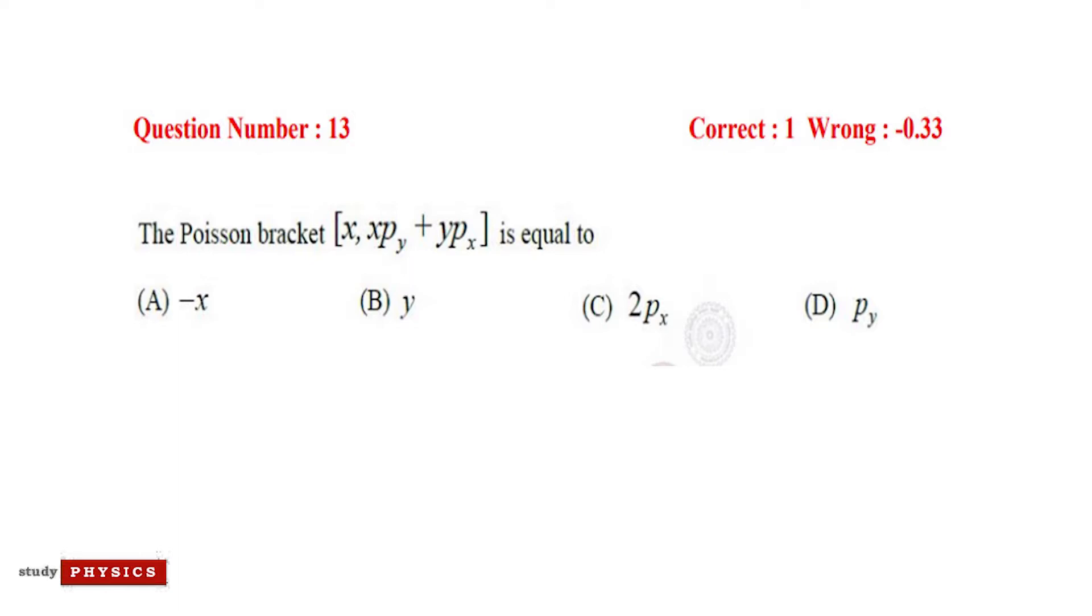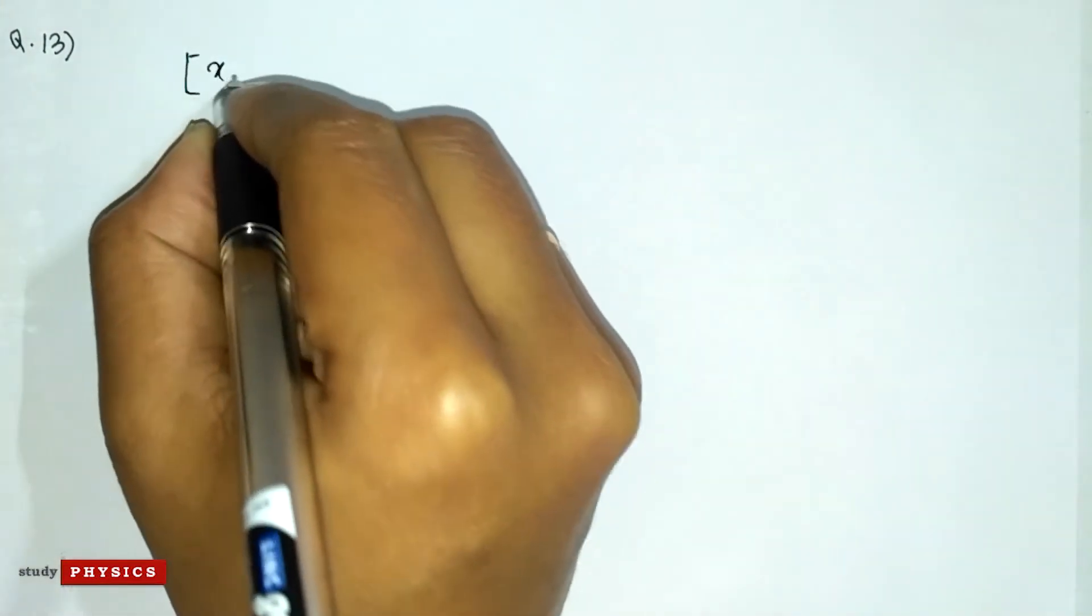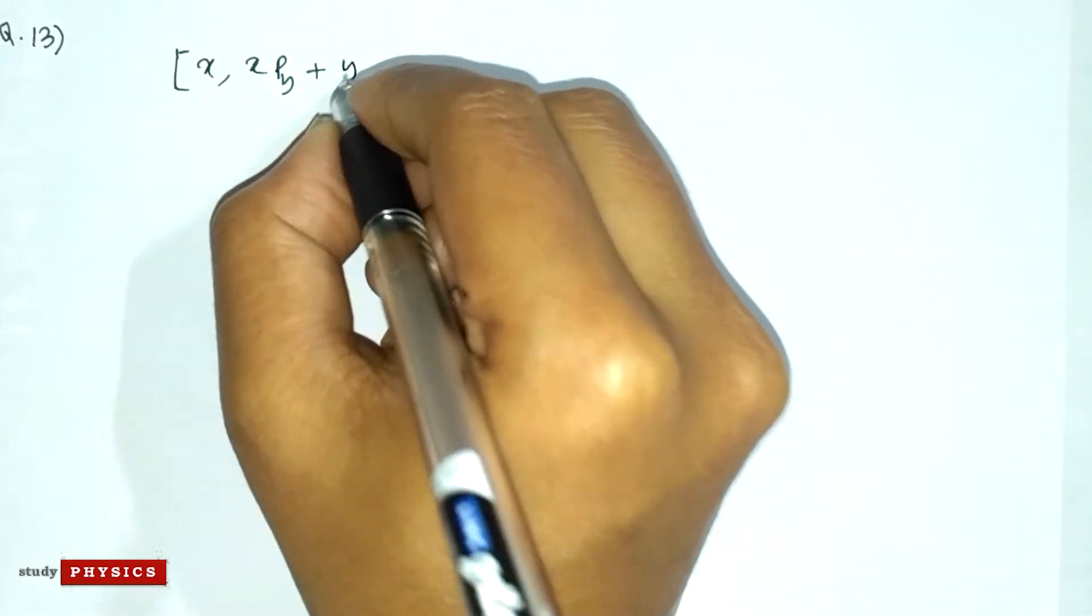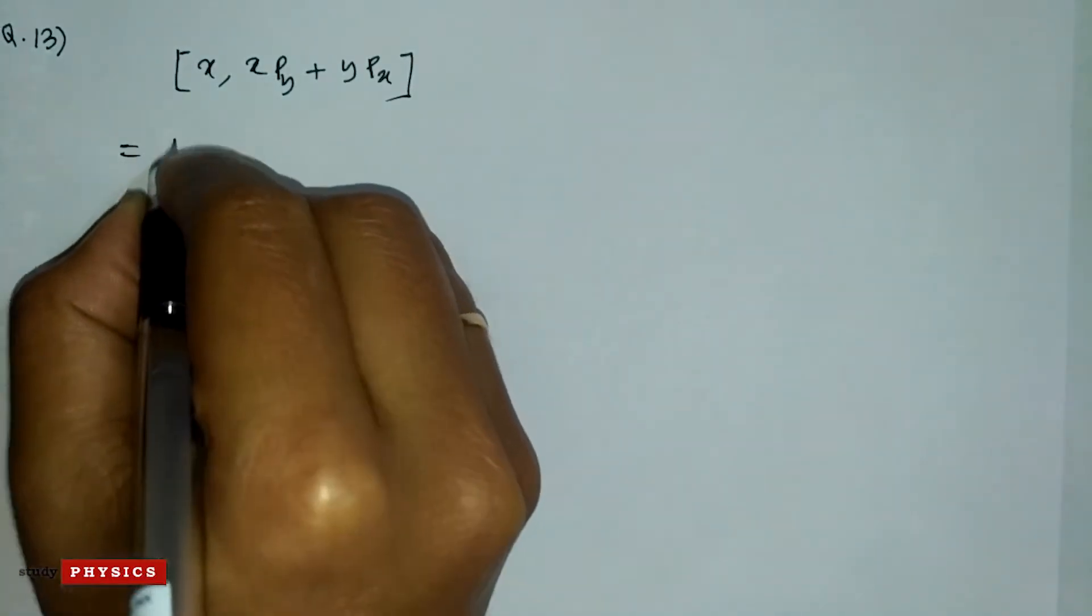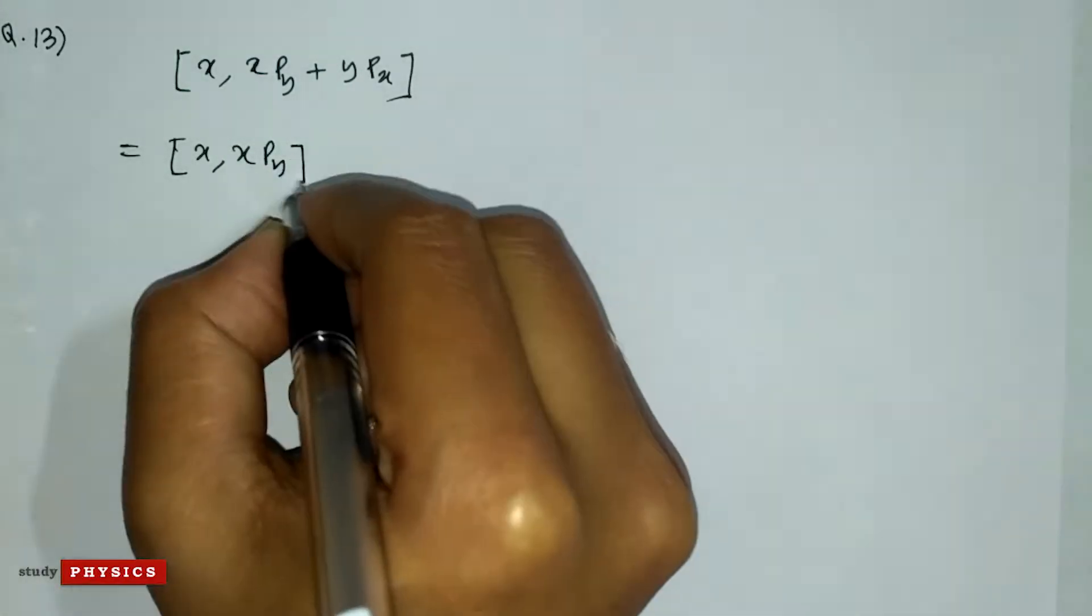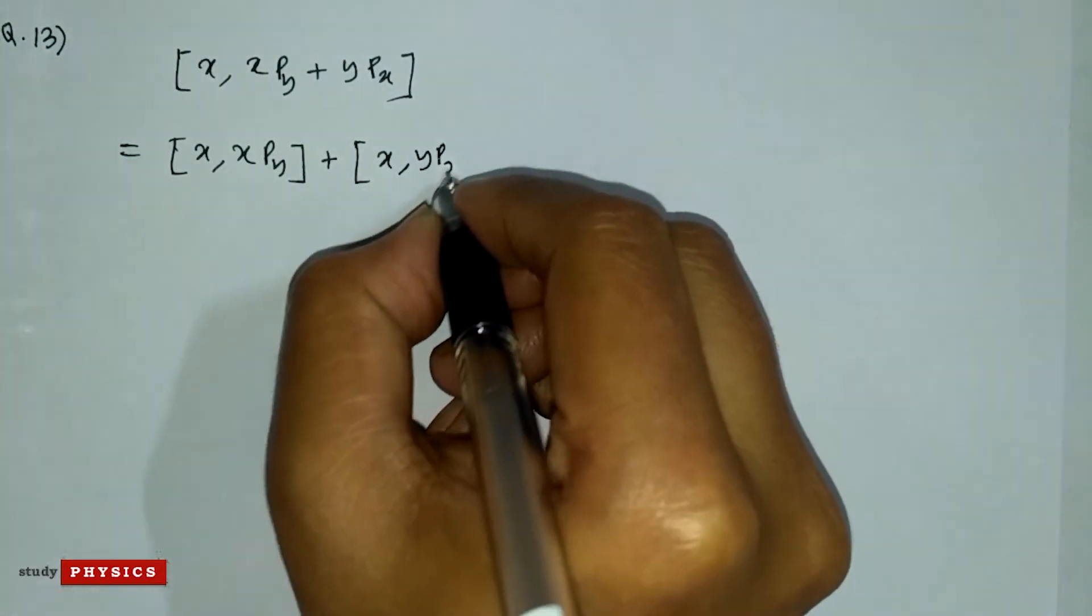The Poisson bracket [x, xp_y + yp_x] is equal to... From here we can write this as [x, xp_y] + [x, yp_x].